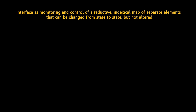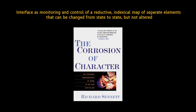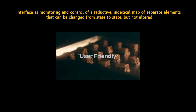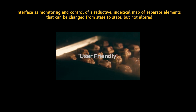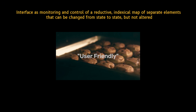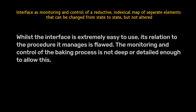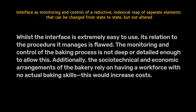For the second category, Fuller borrows from Richard Sennett's book "The Corrosion of Character," where he talks about a bakery in Boston. There, a user-friendly interface controls the bread-making process without requiring workers to understand the actual baking process. Workers use on-screen icons to monitor and manage the baking, but have no need for an understanding of how to bake bread — the process is illegible to them. Whilst the interface is extremely easy to use, its relation to the procedure it manages is flawed. Additionally, the socio-technical and economic arrangements of the bakery rely on having a workforce with no actual baking skills, which would increase costs.